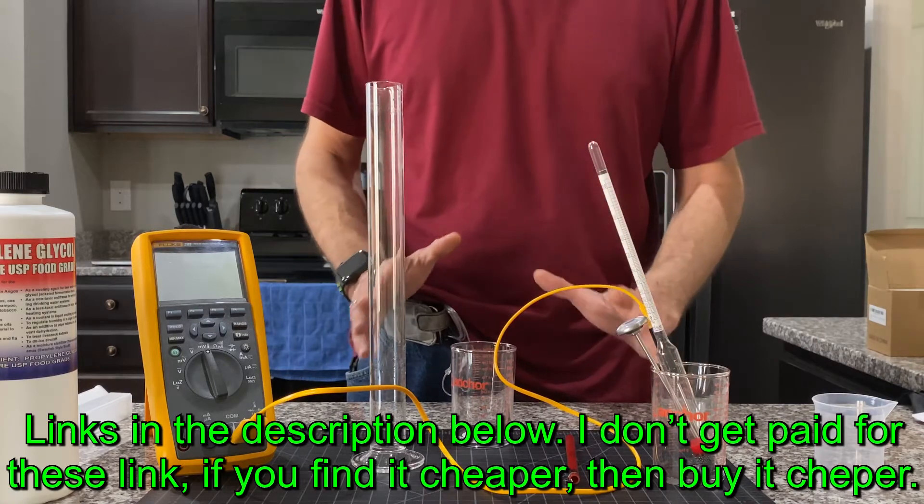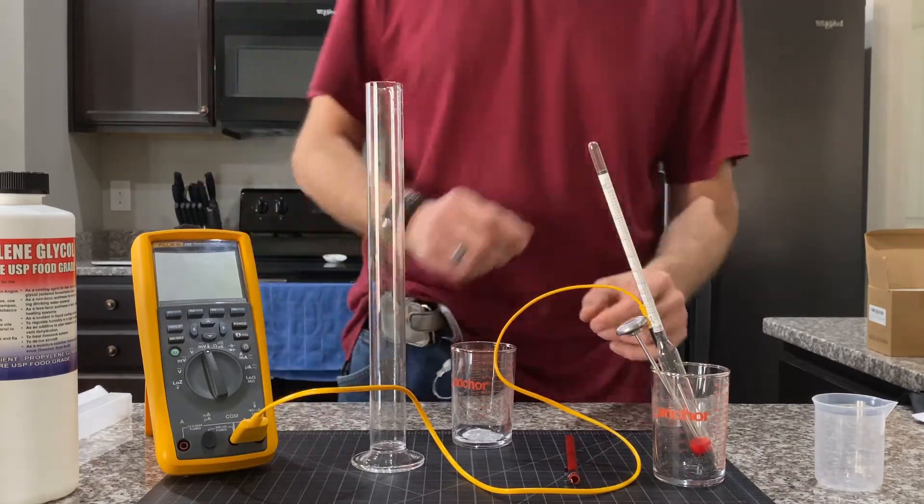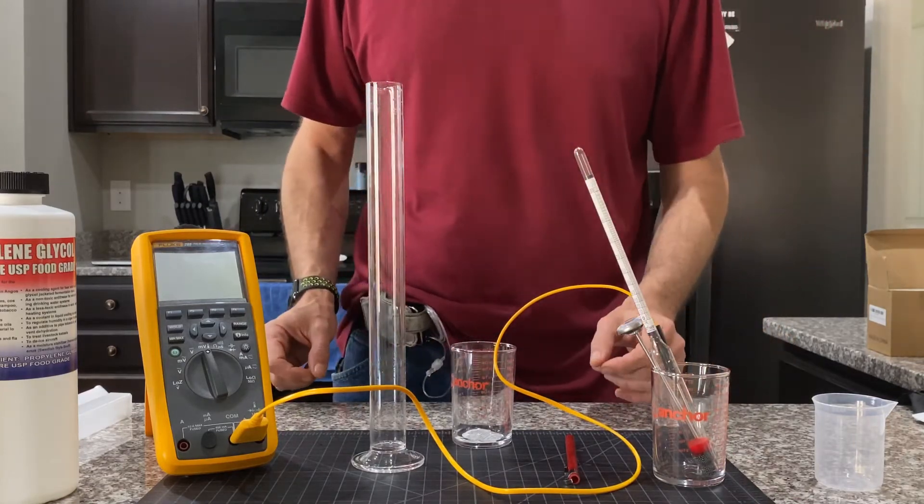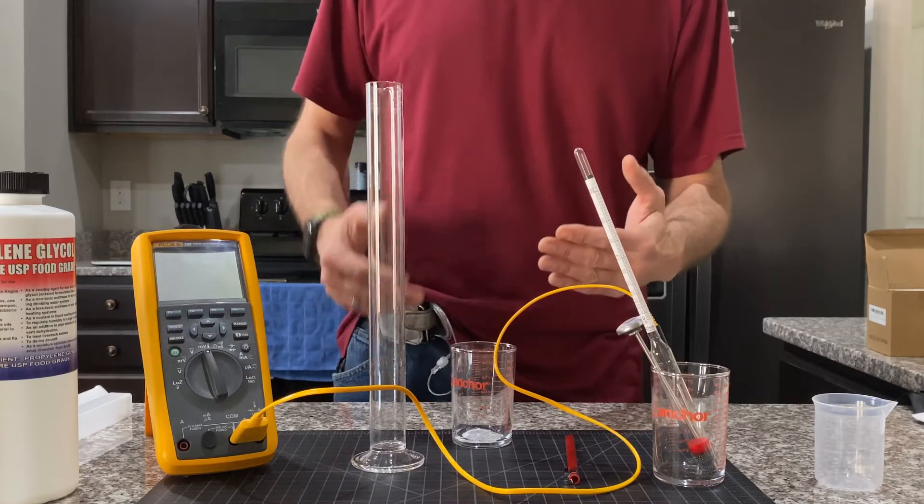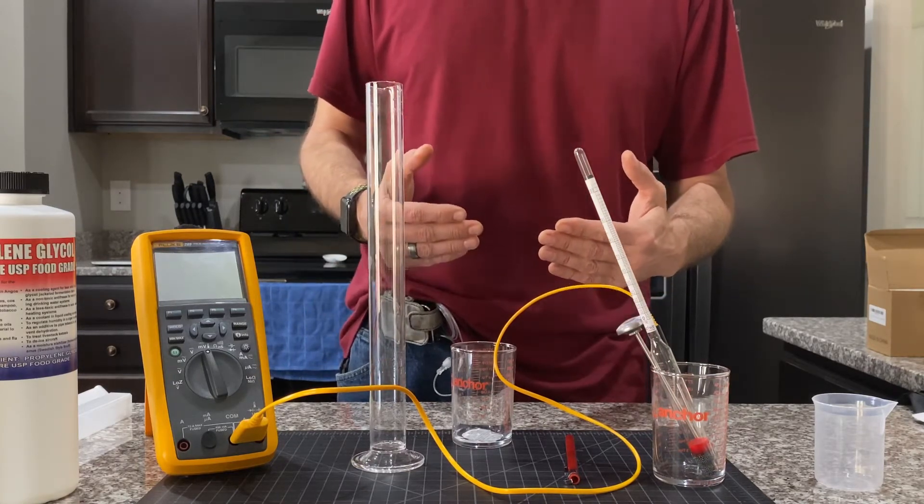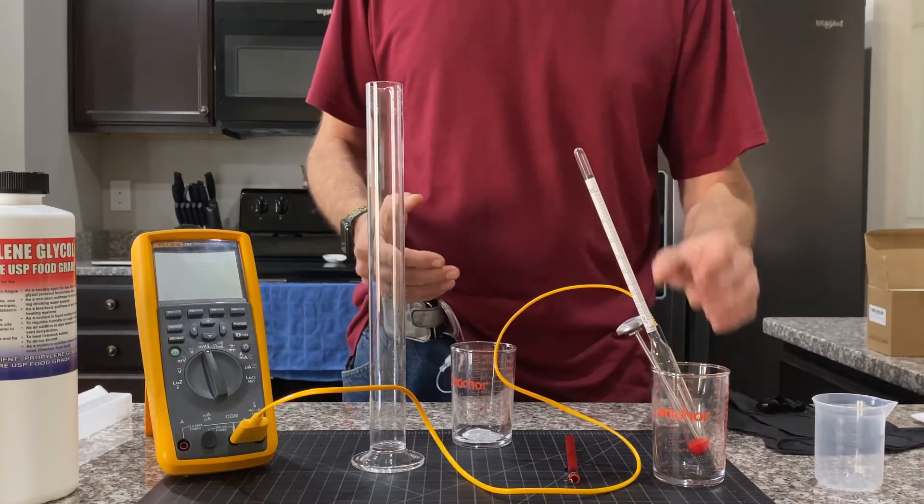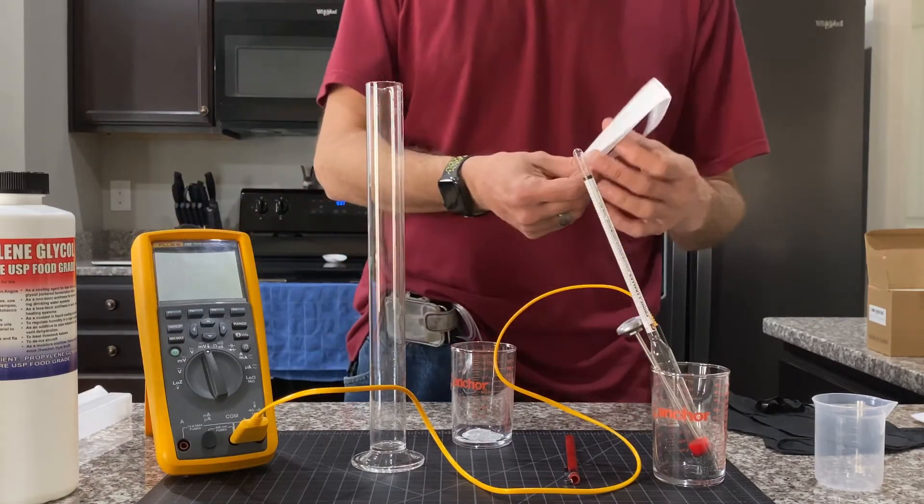About eighteen dollars after tax, and you can actually test your hand sanitizer solution and make sure it's accurate. The first thing I want to do is establish a baseline to make sure this is accurate. We're going to mix up 75% rubbing alcohol with 25% distilled water so I can ensure this is reading correctly.